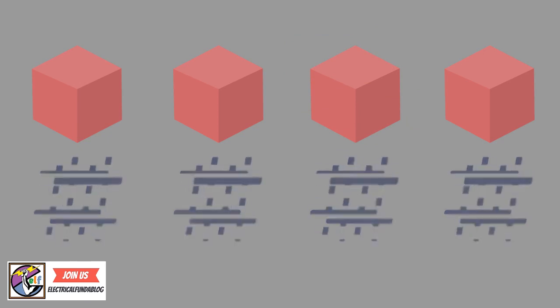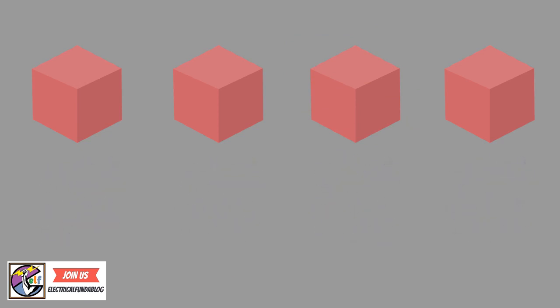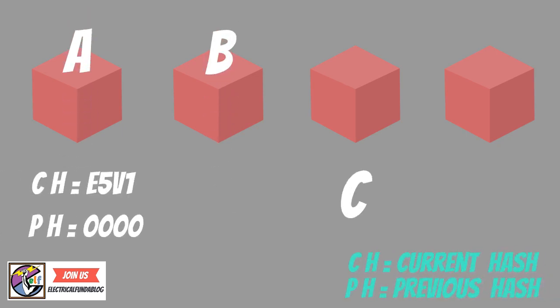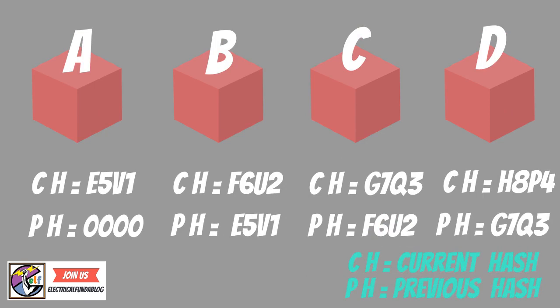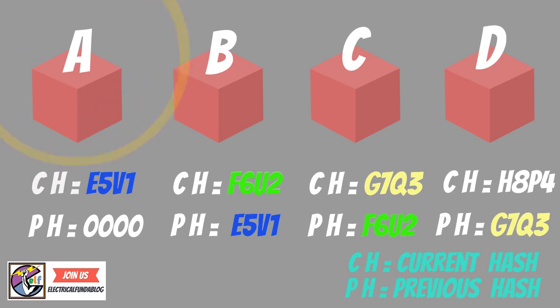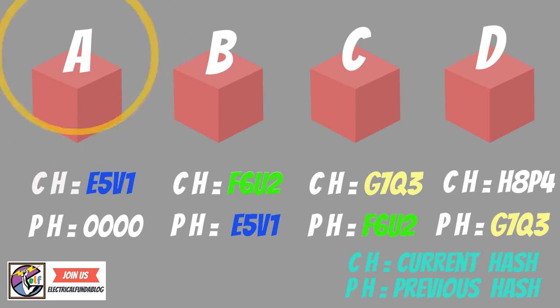We can see this with an example. Suppose there are 4 blocks named A, B, C, and D. The information of each block is as it is. Here we can see each block has a hash and the hash of the previous block. So block D points to block C, block C points to block B, and block B points to block A. Block A is the first block of the chain — it does not have any previous block. It is called the Genesis block.